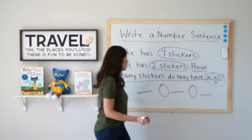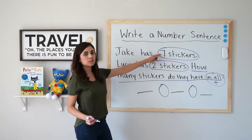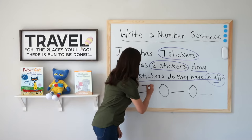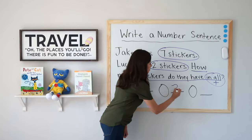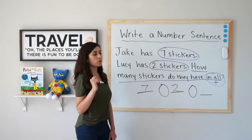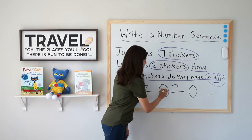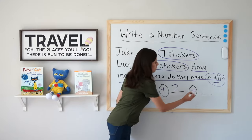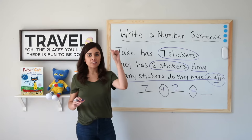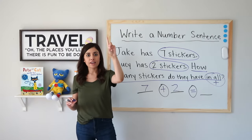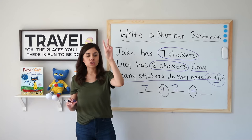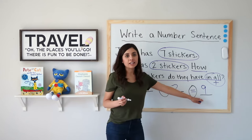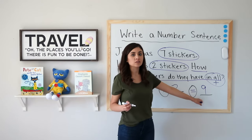So I will take my two parts, seven and two, and write them down in my number sentence. Seven and two, and I know that I have to add them. Seven plus two equals — I have seven and I jump up two: seven, eight, nine. Seven plus two is nine. Nine is my whole, and it is also called the sum.